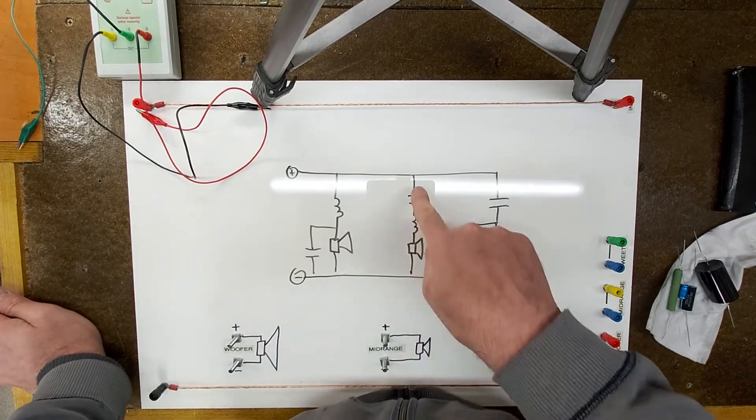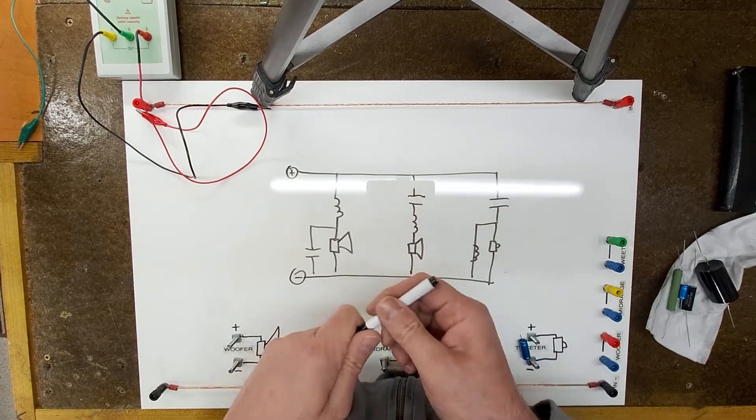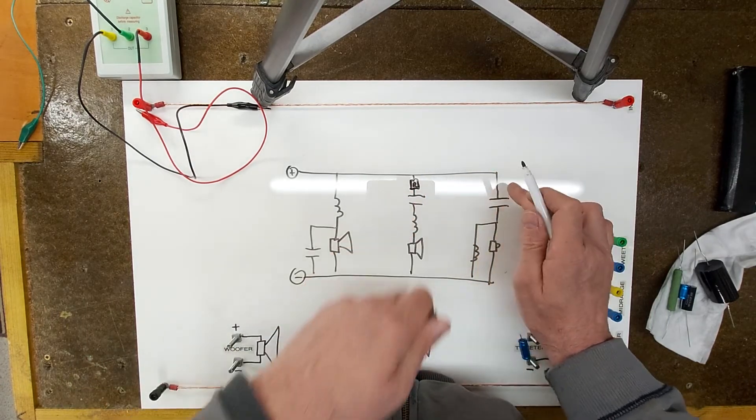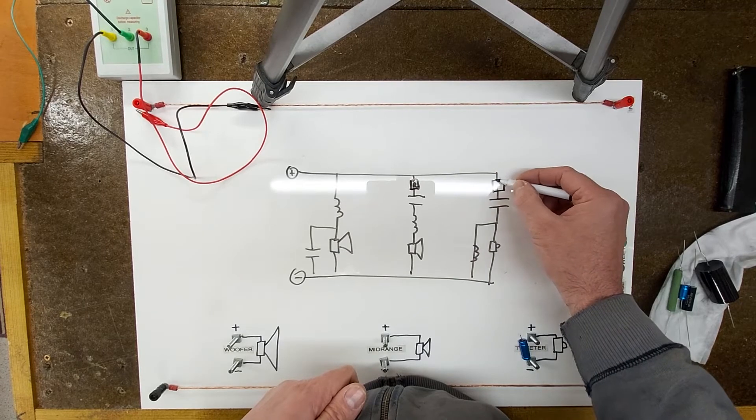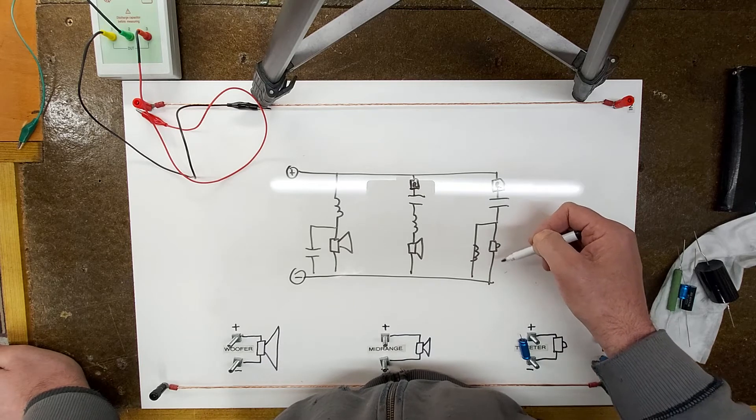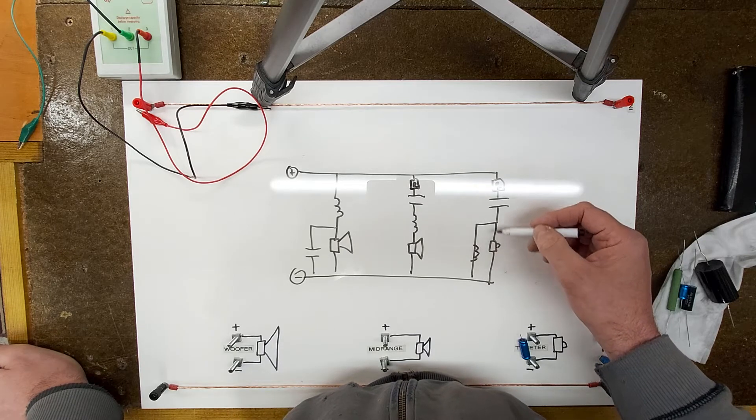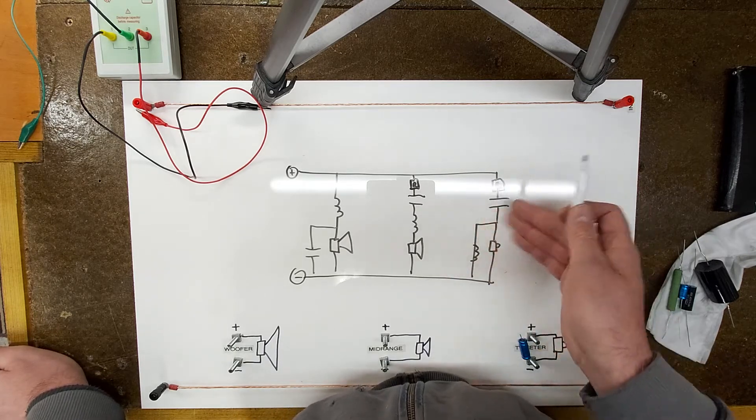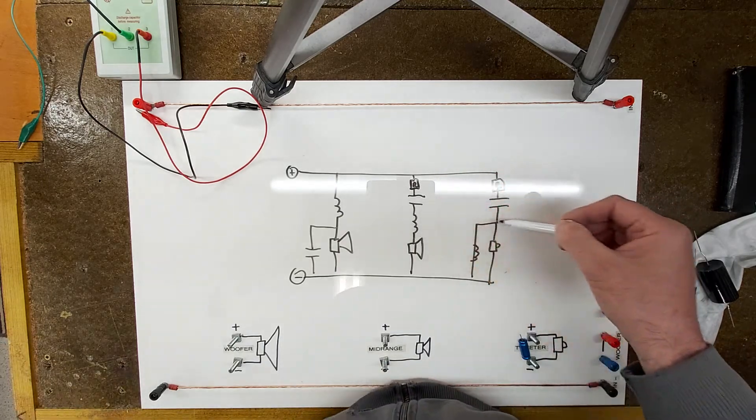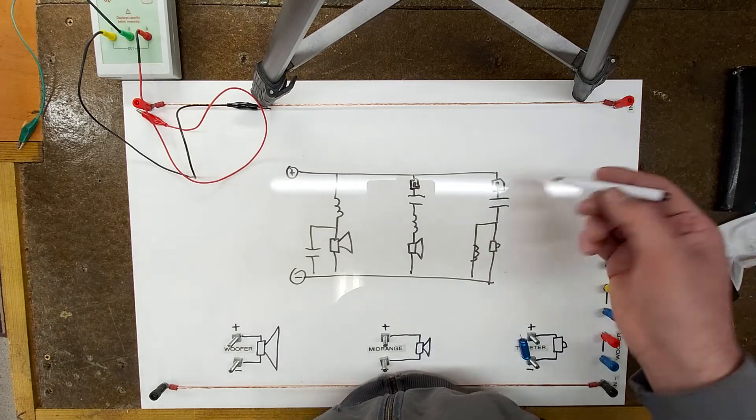If you need to attenuate these circuits, so reduce their output volume, those resistors must be added before the filter. So a resistor there for your mid-range, and a resistor here for your tweeter. If you add them anywhere else in this circuit you will change the tuning frequency because the circuit will effectively see a different impedance. They must be before the filter, not in between or anything like that. Chances are these are only going to need to be small values like an ohm or half an ohm.